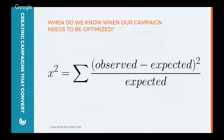In front of you now you should see the chi-squared formula. This is really important when it comes to the question of when to optimize and when do I have enough data to optimize. If stats isn't really your thing, we're sharing a quick tool that allows you not to do the nitty-gritty math. We like to use the chi-squared goodness-of-fit formula to determine if it's important to optimize now and whether we have enough data to constitute optimization.